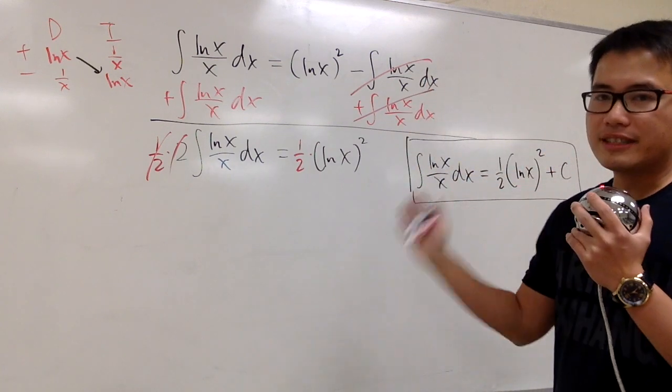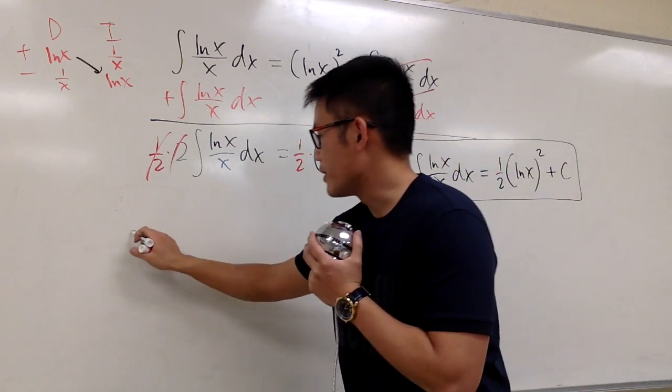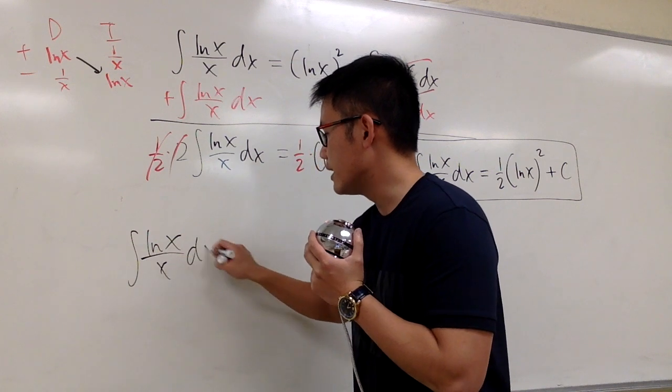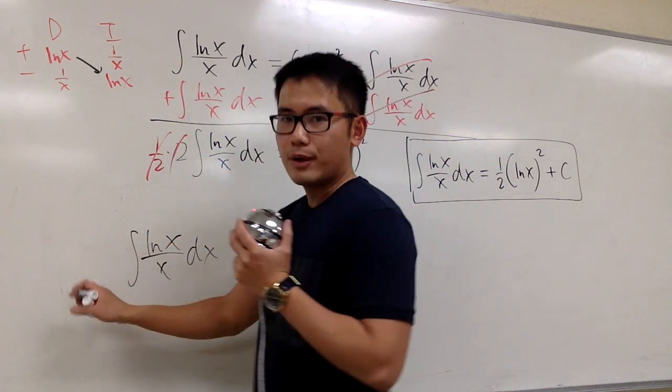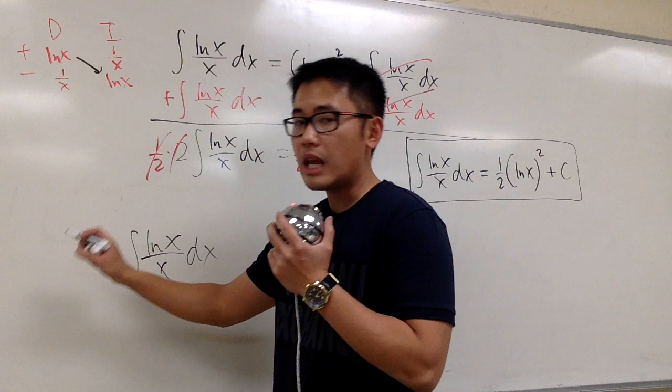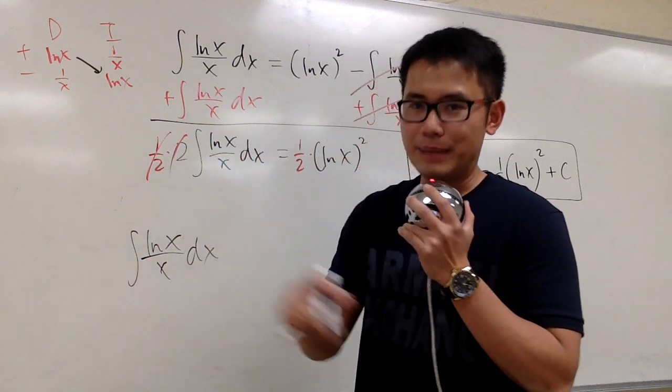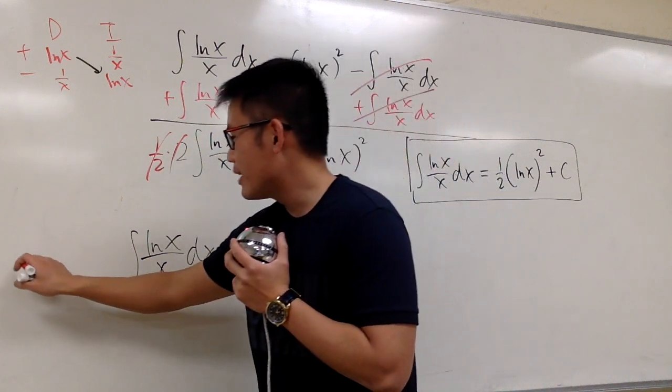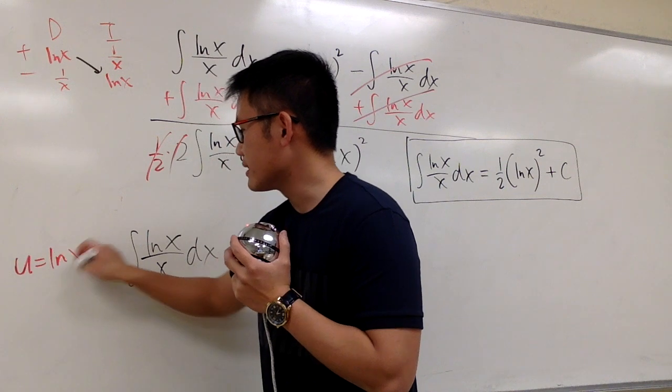Let's take a look of the same integral. Let me just write it down right here. Integral of ln x over x dx. But this time, I'll just put it on the side like this. I will do it with u substitution. Let me say u equals to ln x to begin with.